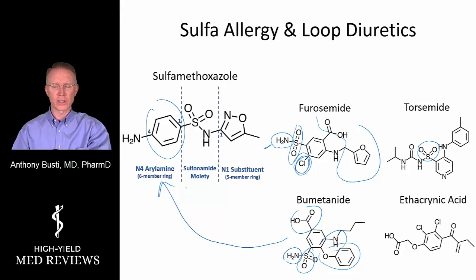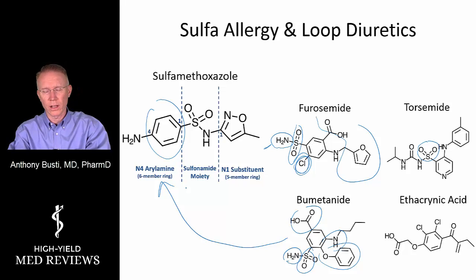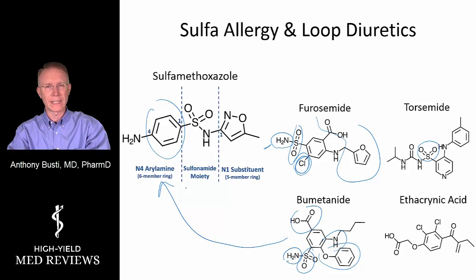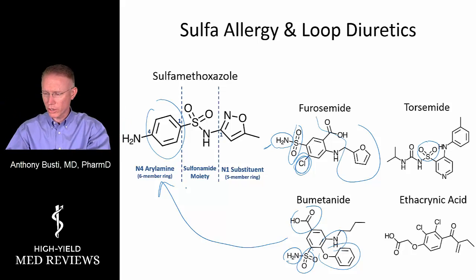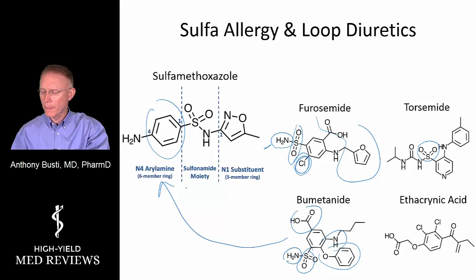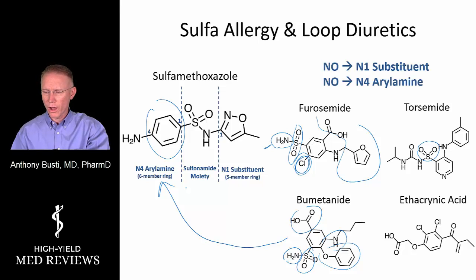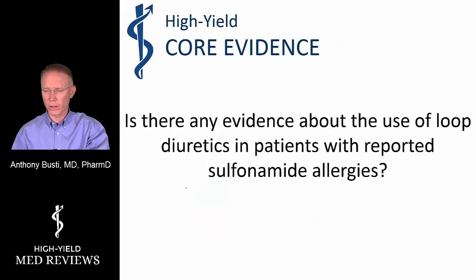The one loop diuretic historically taught as the drug of choice in sulfa allergy is ethacrynic acid, because it contains no sulfonamide moiety at all. All loop diuretics lack the N1 substituent, and all lack the N4-arylamine group.